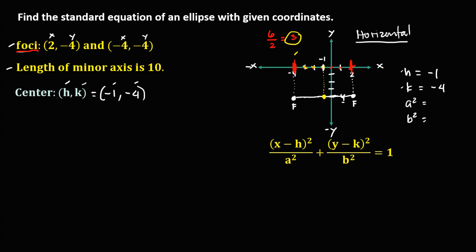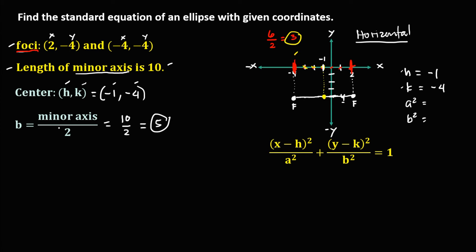From the given, the length of the minor axis is 10. To solve for b, we divide the minor axis by 2: 10 divided by 2 equals 5. So b equals 5, and b squared equals 5 squared, which is 25.